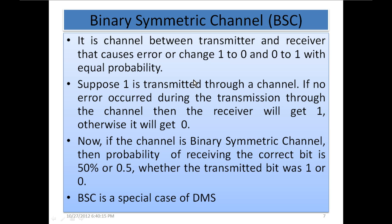Binary symmetric channel. It is channel between transmitter and receiver that causes error or changes 1 to 0 and 0 to 1 with equal probability. The probability of flipping or toggling of a transmitted bit is equal for 1 and 0. The chances of flipping from 1 to 0 is 50% and 0 to 1 is also 50%.